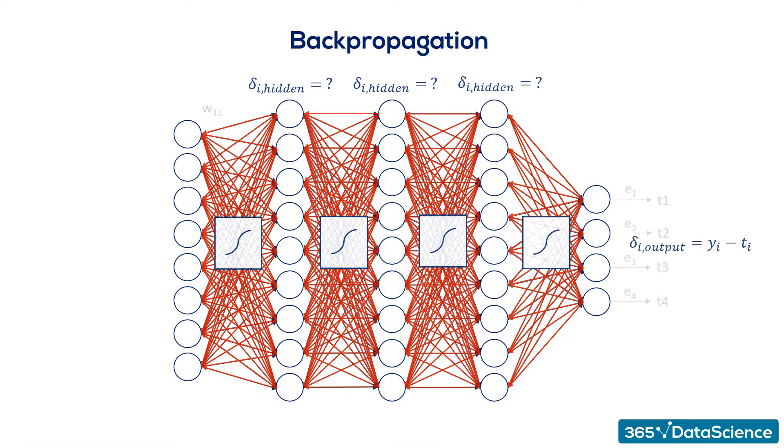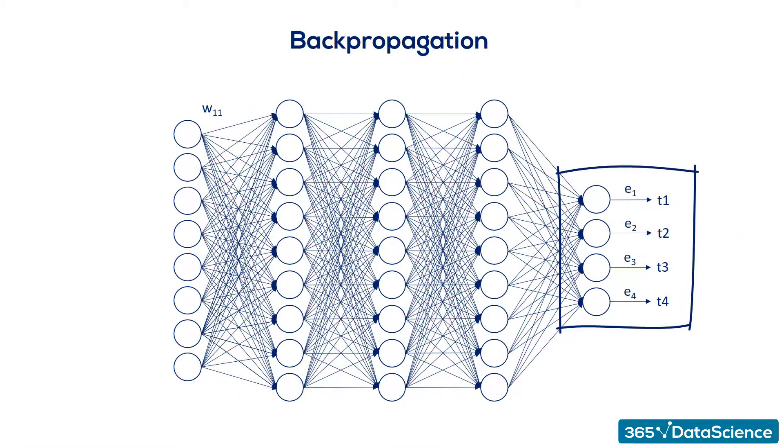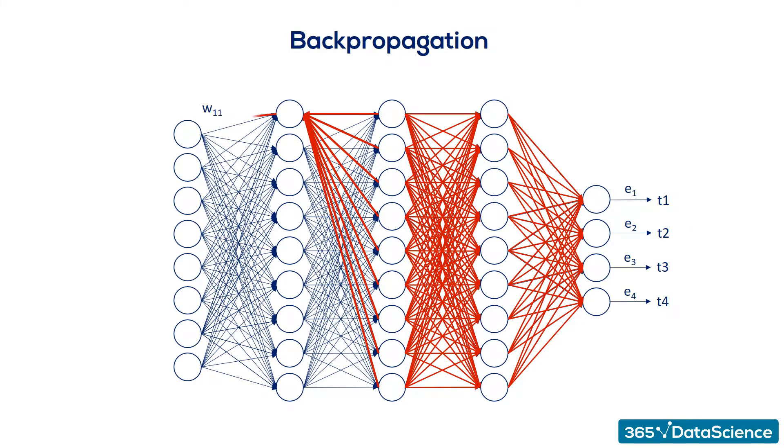Now, the way academics solve this issue is through errors. The main point is that we can trace the contribution of each unit, hidden or not, to the error of the output.